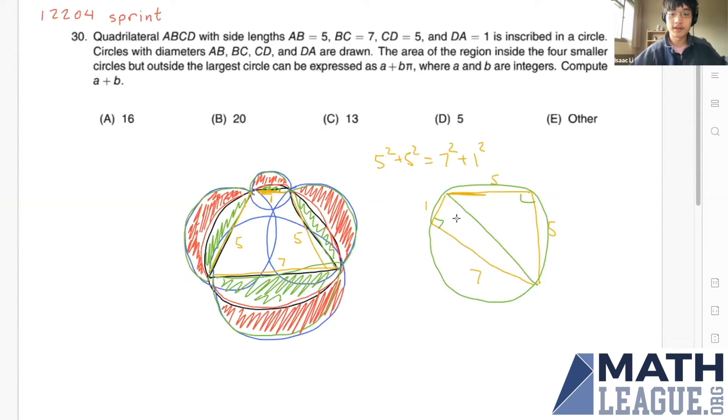And in a cyclic quadrilateral like this, we have right angles, and therefore this is a diameter. And this diameter has length five root two. So that's good. Now we know what the diameter of the circle is.